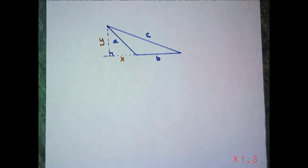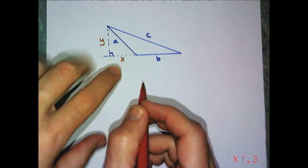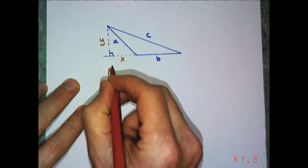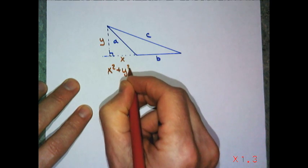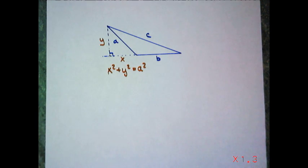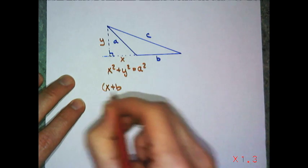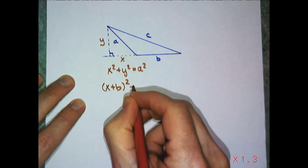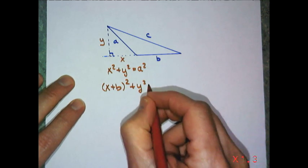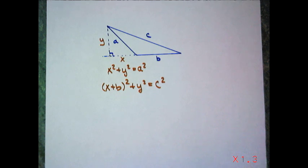Now I want to make a relationship between the side lengths. I know A, B, and C, but not X and Y. By the Pythagorean theorem, X squared plus Y squared equals A squared. Also, X plus B, quantity squared, plus Y squared equals C squared. Since I was given A, B, and C, I'll need to eliminate X and Y.